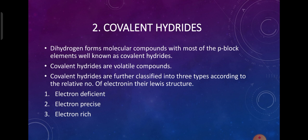Next, covalent hydrides, also known as molecular hydrides. These hydrides are formed by sharing of electrons, and p-block elements form this type of hydride. Covalent hydrides are volatile in nature. They are further classified according to the relative number of electrons in their Lewis structure into: electron-deficient hydrides, electron-precise hydrides, and electron-rich hydrides.